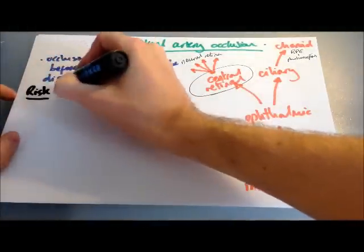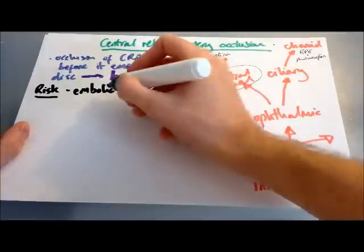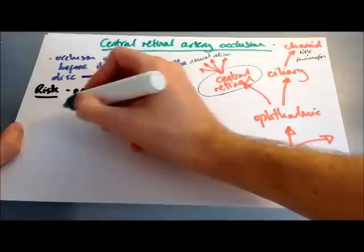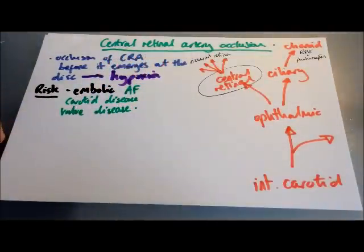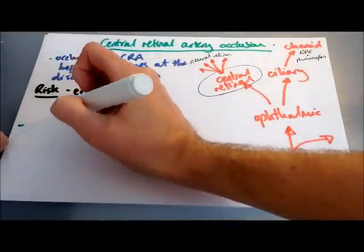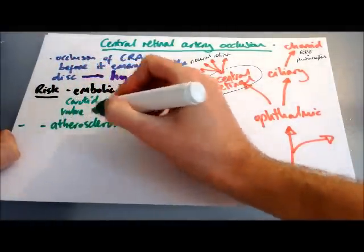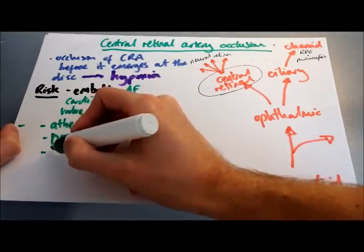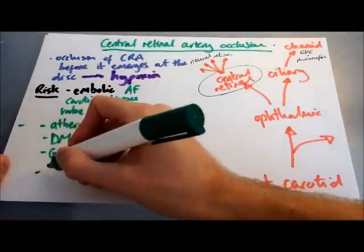There are a number of risk factors for this condition. Anything that causes emboli increases the risk — things like carotid disease, atrial fibrillation, valvular disease and aortic disease. There are also risk factors such as atherosclerosis, hypertension, diabetes mellitus, inflammatory disease such as giant cell arteritis or temporal arteritis, thrombophilia, combined oral contraceptive, raised intraocular pressure and trauma. Most people are over 60.